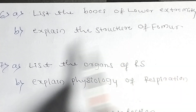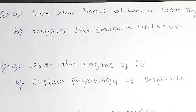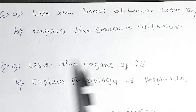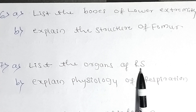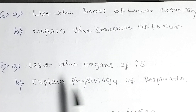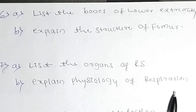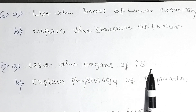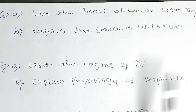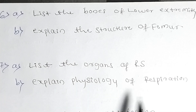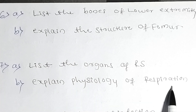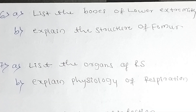The next question is: list the organs of the respiratory system and explain the physiology of respiration. List all the organs — trachea, lungs, alveoli, bronchi, bronchioles — these are all part of the respiratory system.